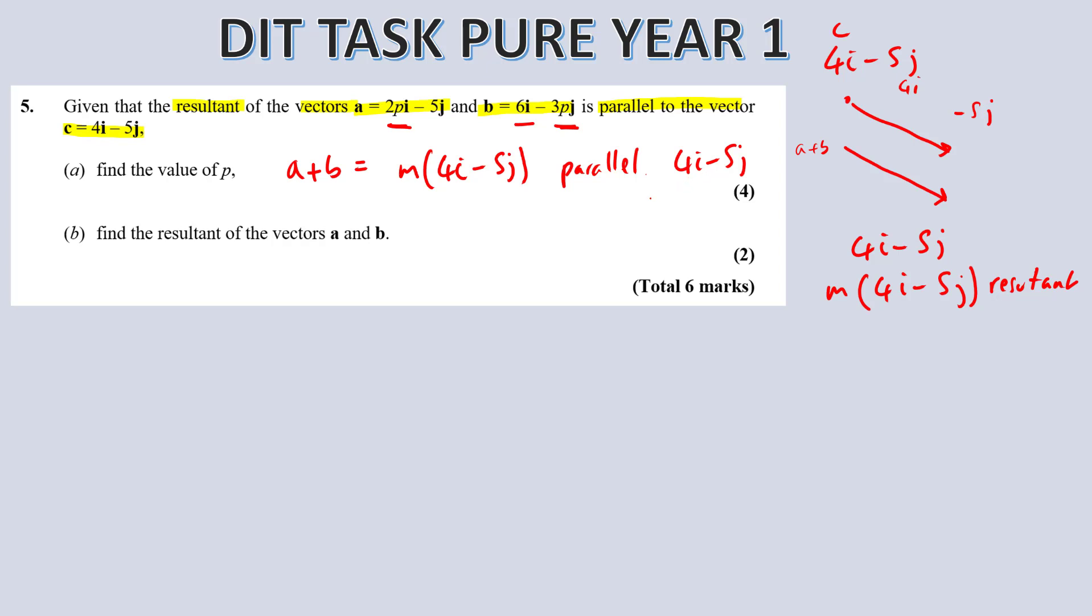So essentially, a plus b is going to be in the form of m times 4i minus 5j. And that will make it parallel to c, which is 4i minus 5j, and that should make sense. So first thing we can do is, what is a plus b together? So a plus b, we're going to equate the i's. So what are we going to get? 2p plus 6. So 2p plus 6, that's equivalent to 4m, because of c is here. Now we can do that with the j's. The j is minus 3p and minus 5 has got to be equivalent to some form of m times 5j. So that's just going to be minus 5m.